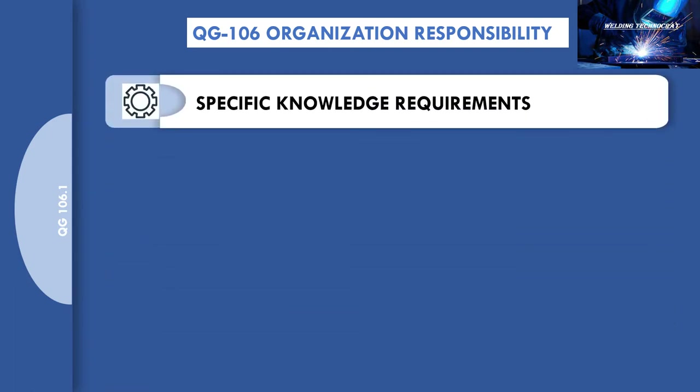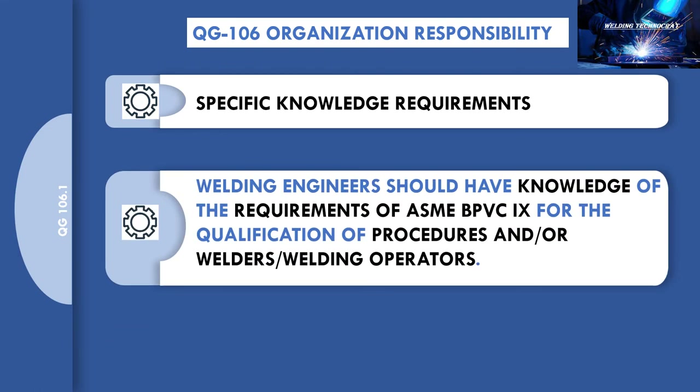ASME Section 9, QG-106 demands specific knowledge requirements from the welding engineer. The welding engineer should have knowledge of the requirements of ASME BPVC Section 9 for the qualification of procedures and performance.